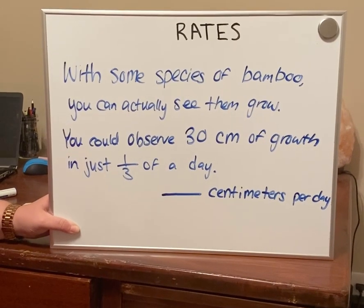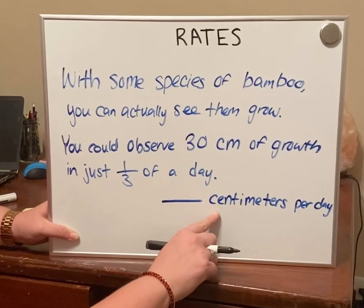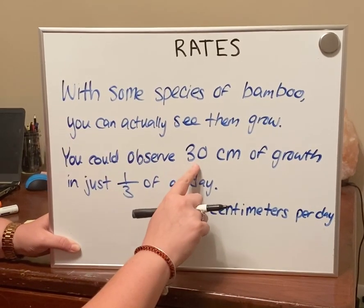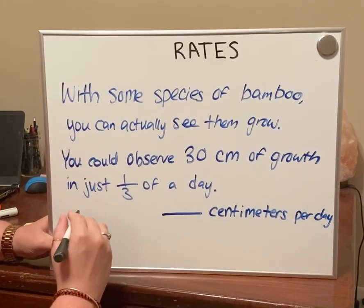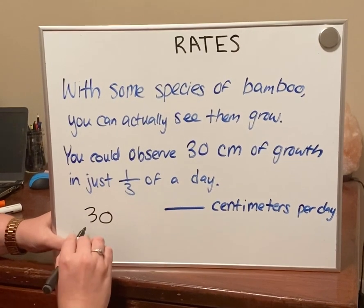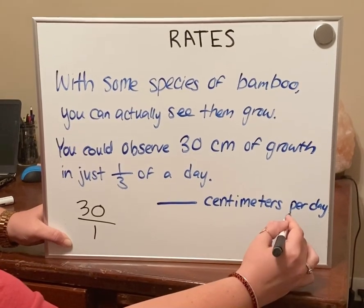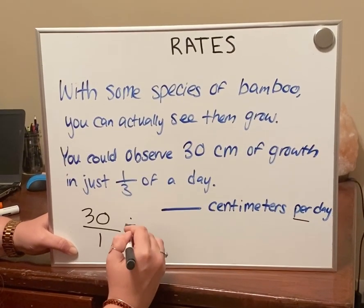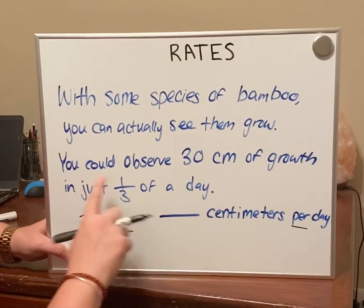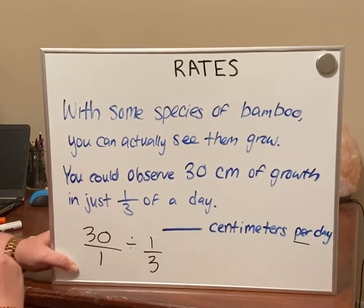Just like the other problem we set up two different fractions. The first fraction is centimeters — going back to the problem it says 30 centimeters, so we put 30 over 1. That word 'per' means to divide. The second part is the time: one third of a day, which is already a fraction, so we're good.